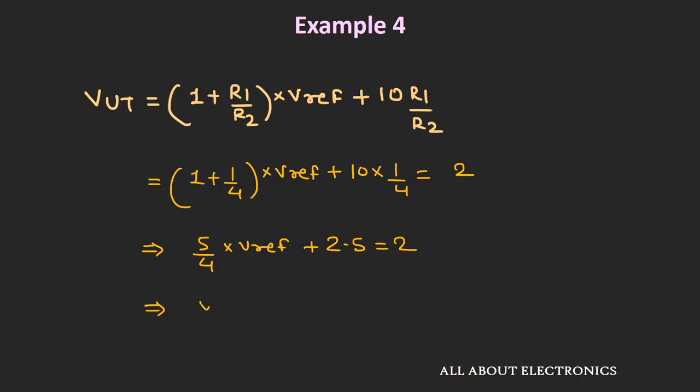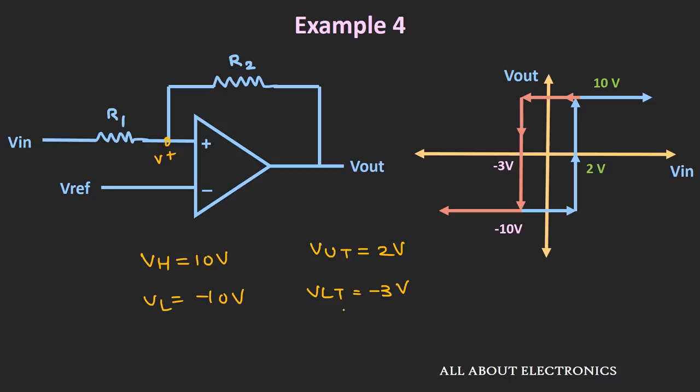For the given circuit, with R1/R2 = 1/4 and reference voltage = −0.4V, we achieve the desired hysteresis curve with upper threshold voltage of 2V and lower threshold voltage of −3V. That's it for this video. I hope you understood how to solve problems based on the comparator and the Schmitt Trigger. If you have any questions, let me know in the comments. Hit the like button and subscribe for more such videos.